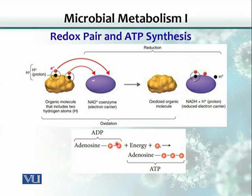In the next reaction, ADP — adenine diphosphate — receives energy captured in the form of those electrons. That energy is used to attach a phosphate group to ADP, converting it into ATP.